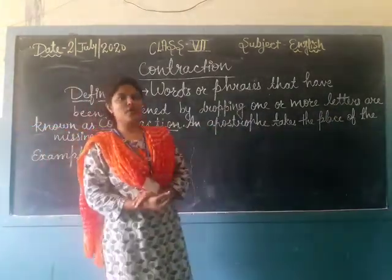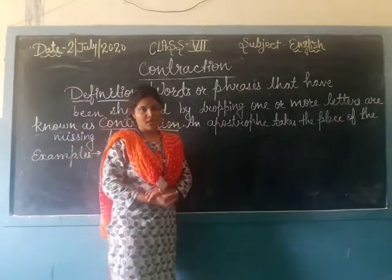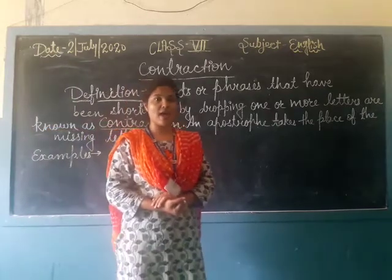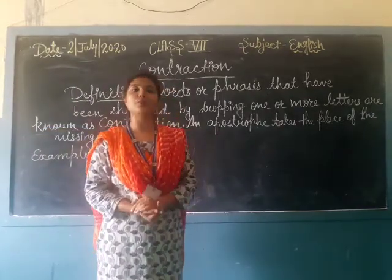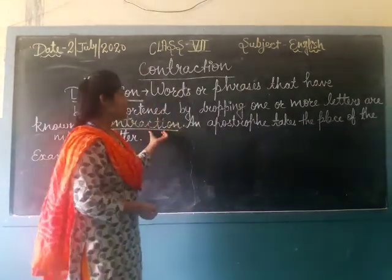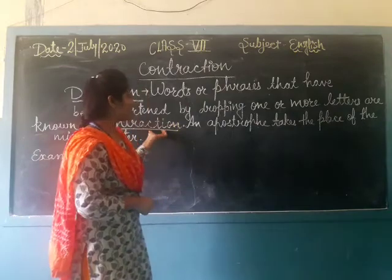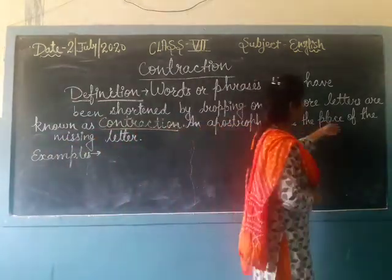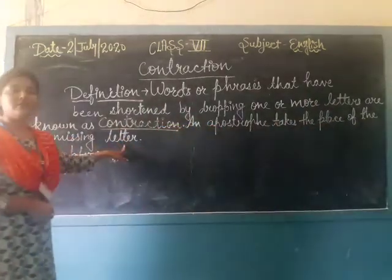In previous classes, we studied contraction by the name of 'short form.' Any word — suppose 'I am' — if you want to write 'I am' in short form, we can write it as a short form, and that is called a contraction. A contraction is made with the help of an apostrophe, which takes the place of the missing letter.